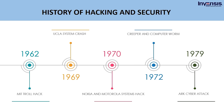In 1979, Mitnick gained unauthorized access to a computer network. His friend gave him the phone number for the ARK — a computer system that Digital Equipment Corporation (DEC) used to develop its operating system software called RSTS-E. Mitnick copied DEC's company software by breaking into its computer network. This was called the ARK cyber attack.